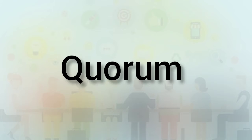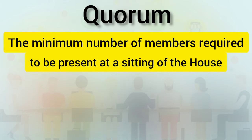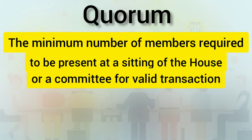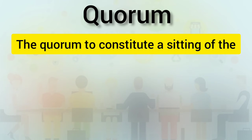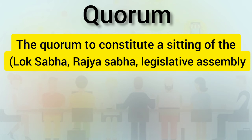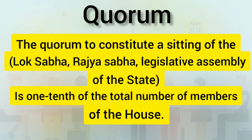Today we are going to talk about quorum — the minimum number of members required to be present at a sitting of the house or a committee for valid transaction of its business. The quorum to constitute a sitting of the house, that is Lok Sabha, Rajya Sabha, or any legislative assembly of the state, is one-tenth of the total number of members of the house.